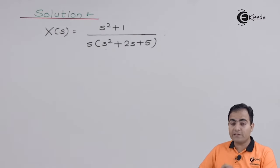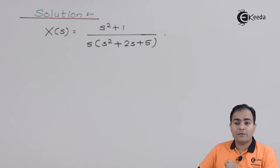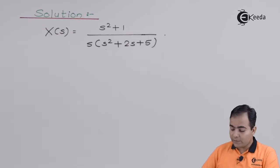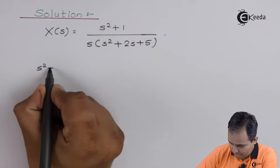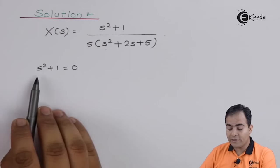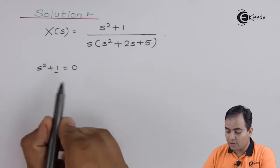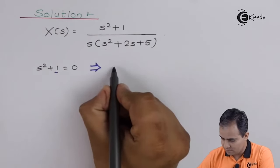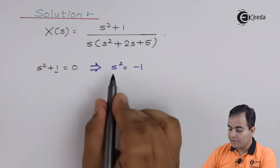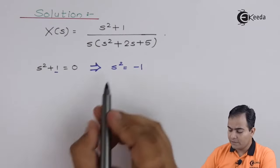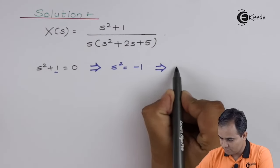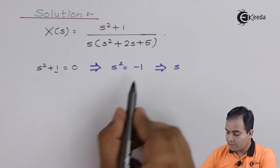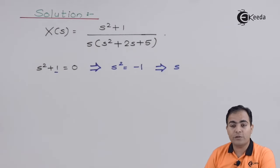First, we will find the factors present in the numerator. To find the factors, we equate the numerator to zero. So we write s² + 1 = 0, which gives us s² = −1. Taking square roots on both sides, the square and square root cancel, and we get s = √(−1).